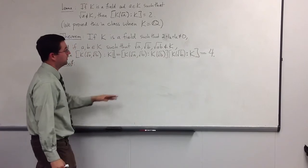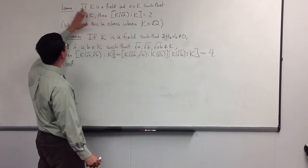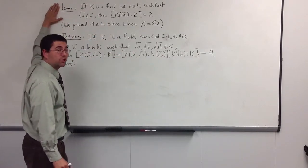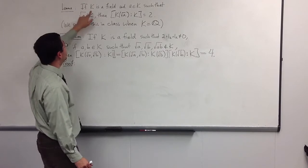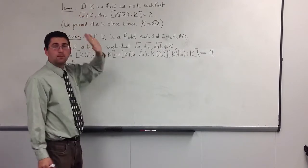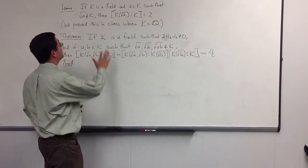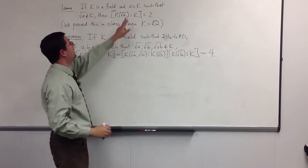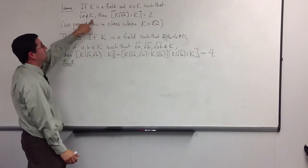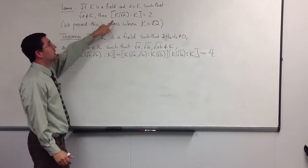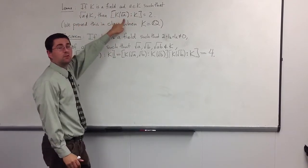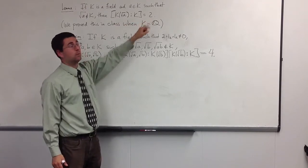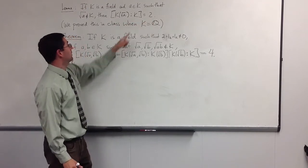In class, we considered this lemma with k equal to ℚ, but the exact same proof still works here. So if you have any field k and take an element whose square root is not in k, then k adjoining √a is going to have dimension 2 over k.